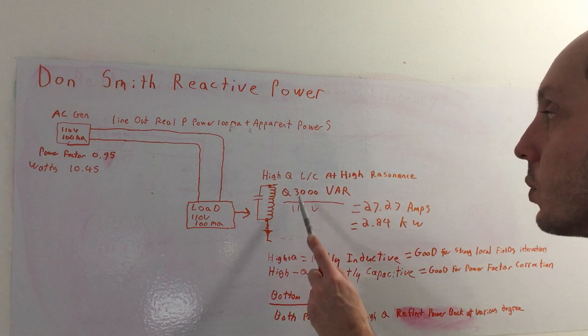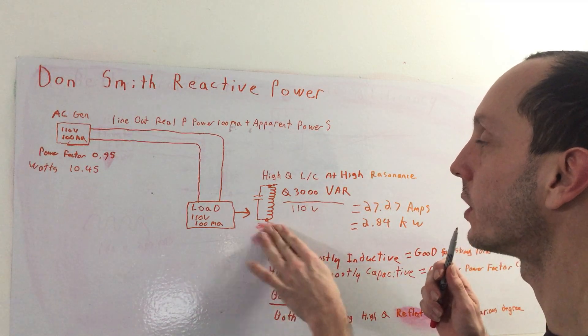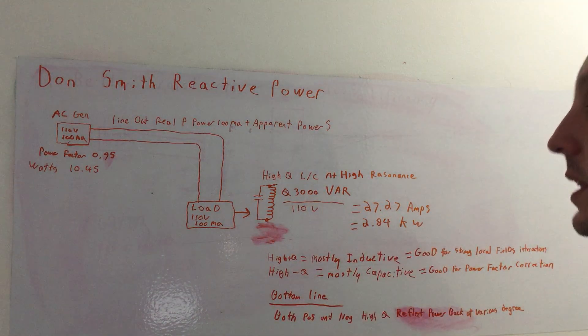So what happens is when we add a coil here, we get resonance. We tune it at a high resonance point. So this is where we bring up our VARs, as long as you don't touch it. Don't try and connect anything with it. Let it do its thing.